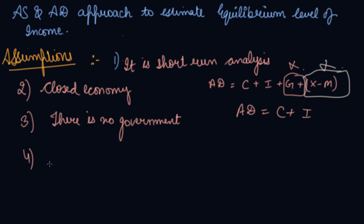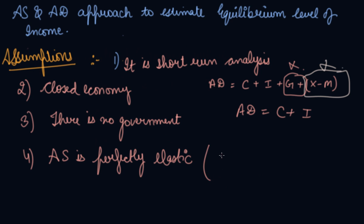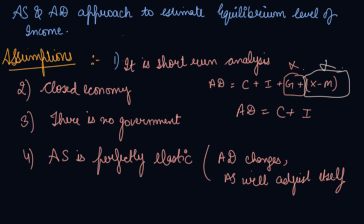The fourth assumption is that aggregate supply is perfectly elastic, which means that if there is any change in aggregate demand, the aggregate supply will adjust itself accordingly. If demand has increased in the market and supply is less, producers will start producing more and increase supply, so aggregate supply adjusts itself according to aggregate demand. These are the assumptions taken while analyzing the equilibrium of income or output.